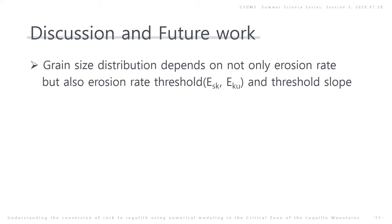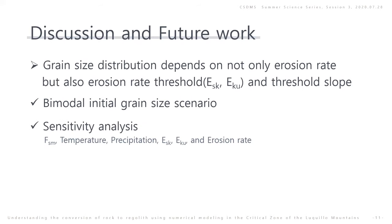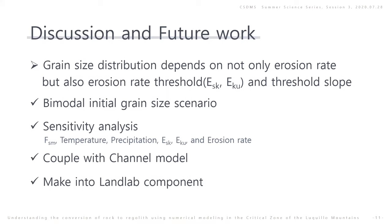In summary, our preliminary study indicates that the grain size distribution depends not only on erosion rate, but also on erosion rate threshold and steep area. But this model needs improvement to become a better model. First, this model considers unimodal input only, so I will test bimodal initial grain input and different input sizes. Second, this model needs a sensitivity check to find a more specific parameter space. Third, this model focuses on the hillslope process only and needs to be coupled with the channel process. Finally, I will integrate this model as a component of Landlab.